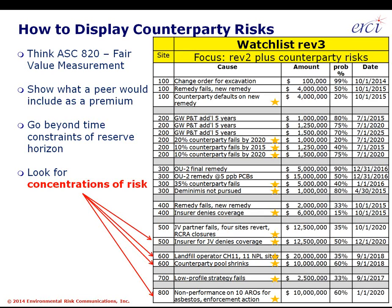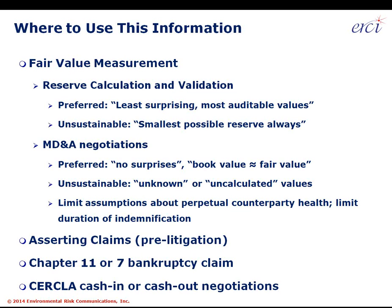A project management team and portfolio manager can clearly articulate where counterparty risk fits into the rest of the organization's risks. Counterparty risk applies the thinking required under ASC 820 for fair value measurement, shows what makes up a premium, goes well beyond typical reserve horizons of 5, 10, or 20 years, and helps identify concentrations of risk where too much risk rides on the financial health of a small group of parties.